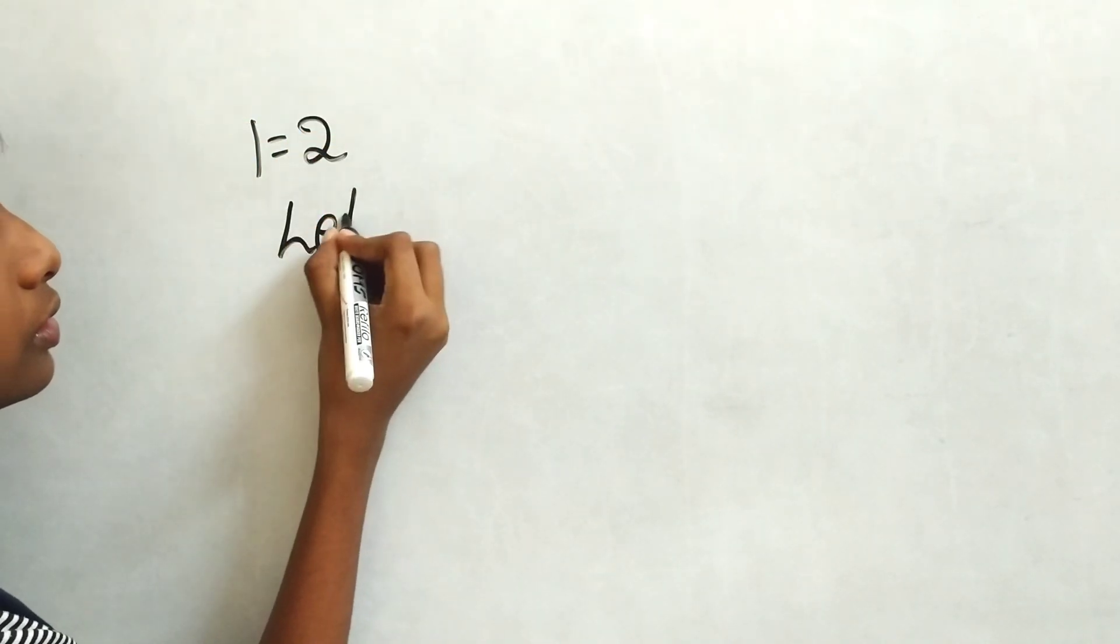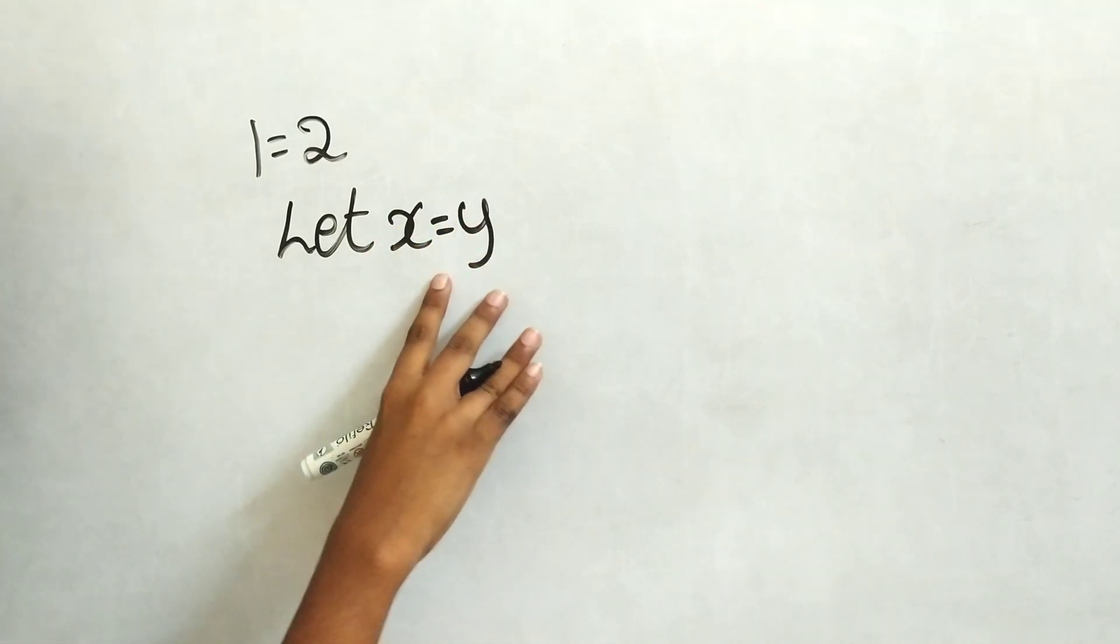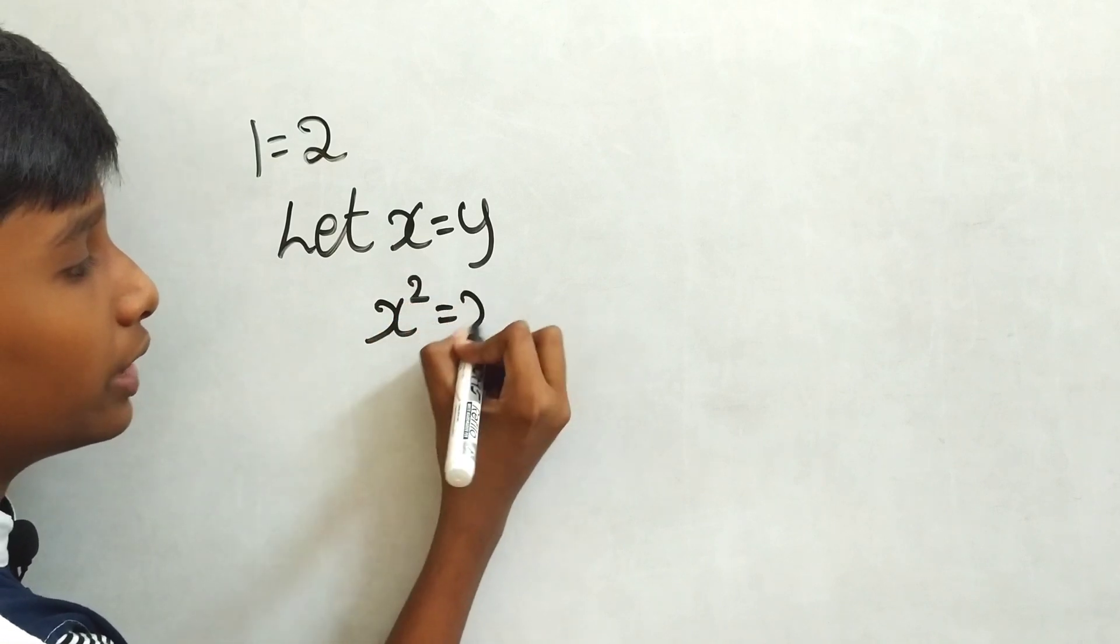Let x equal y. Multiply both sides by x. Then it will be x² equals xy.